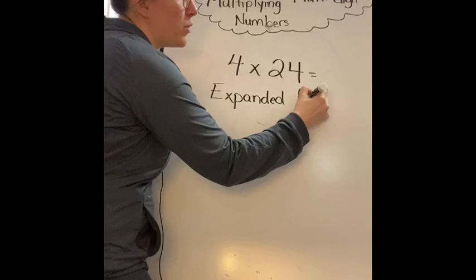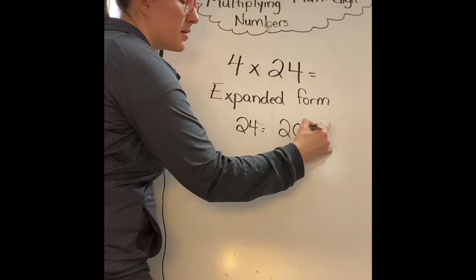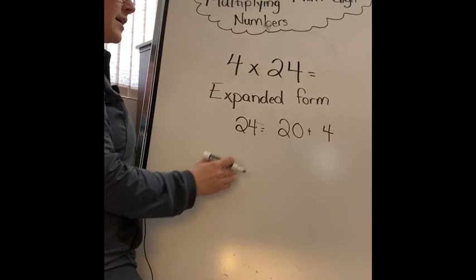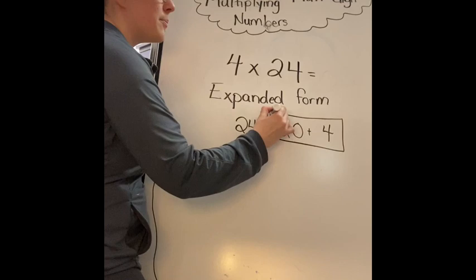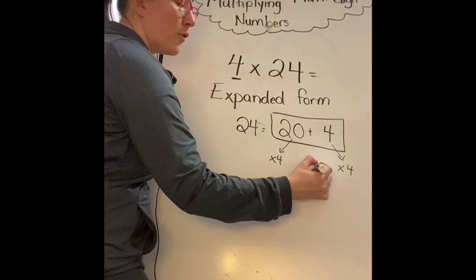We have done expanded form before. If I do expanded form of the number 24, it looks like this: 20 plus 4. That's what we want to use because now we can take this 20 plus 4 and we can multiply both sides by 4, because up here we have a 4. So multiply by 4, multiply by 4, and add them together.